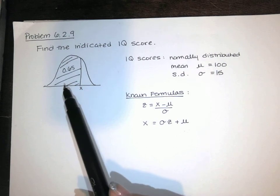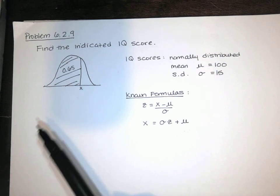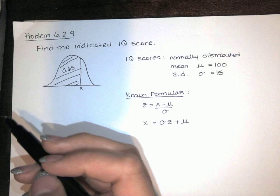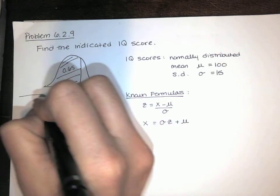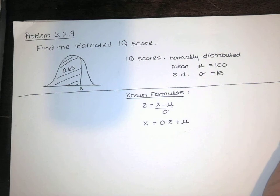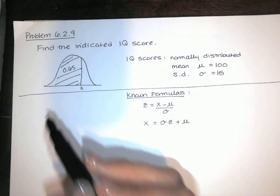That probability is associated with this area under the curve. They told us that IQ scores are normally distributed and they have a mean of 100 and a standard deviation of 15. And they gave us this picture.